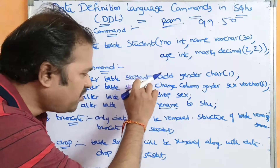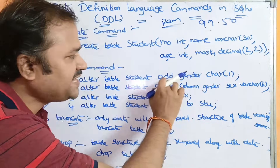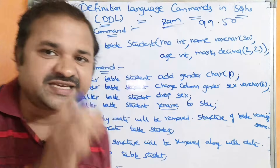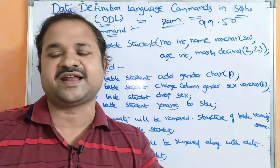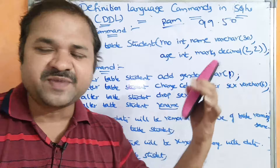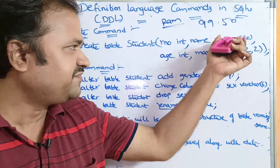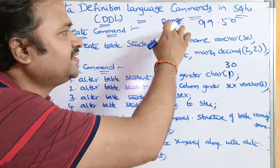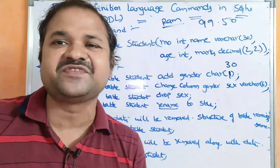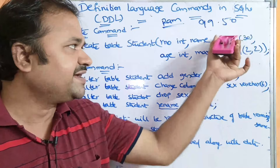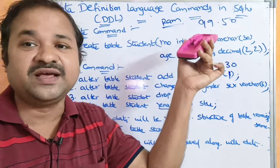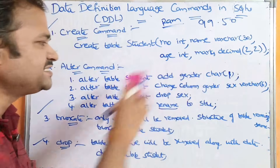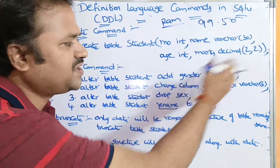First advantage: ALTER TABLE student ADD — here we are adding a column called 'gender'. Gender is of type CHAR, and the maximum size is 1 character, which is fixed length. So it accepts only one character — it may be either male or female, M or F. The major difference between VARCHAR and CHAR is that CHAR is fixed length. If we give size 30 and enter 'RAM', then the remaining 27 characters will be wasted, whereas VARCHAR occupies only the actual variable length used.